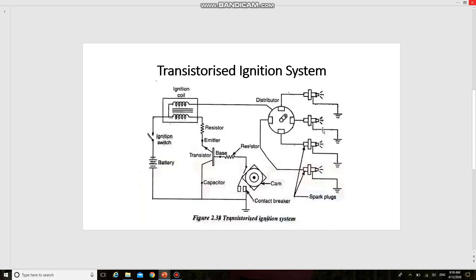The emitter of the transistor is connected to the ignition coil through a resistor. A collector is connected to the battery. The cam in the distributor is rotated by the engine. It opens and closes the contact breaker points.